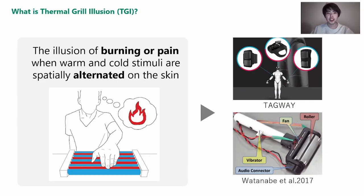Thermal Grill Illusion (TGI) is a phenomenon in which warm and cold stimuli presented simultaneously produce a burning sensation or pain. This is a safe way to present pain, and it is used in many situations such as pain presentation in VR.